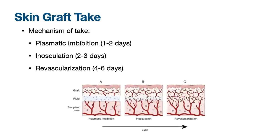As soon as the skin graft is laid down, there's a race between revascularization and ischemia — if the skin graft does not get revascularized in time, it will die. In the first few days, the graft survives by plasmatic imbibition, which is passive diffusion of nutrients and oxygen. Beginning at two days, the recipient and donor capillaries align — a process called inosculation. Beginning at about four days, there is full ingrowth of capillaries into the graft. Until that time, the graft must be bolstered to minimize shearing, as well as hematoma and seroma formation.